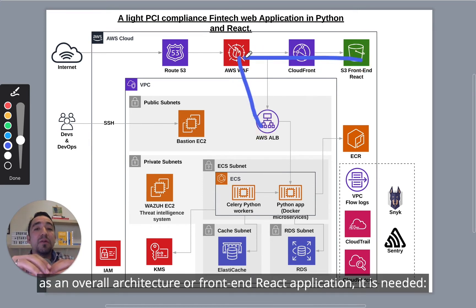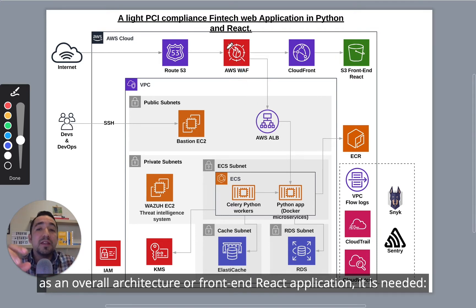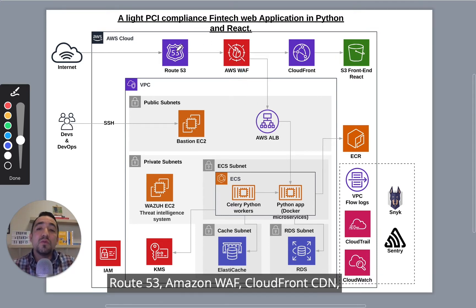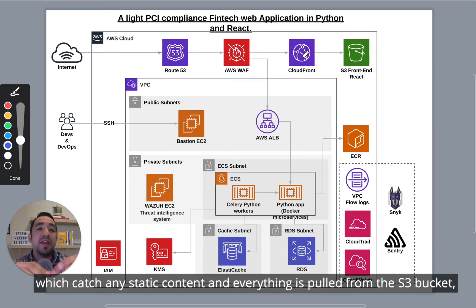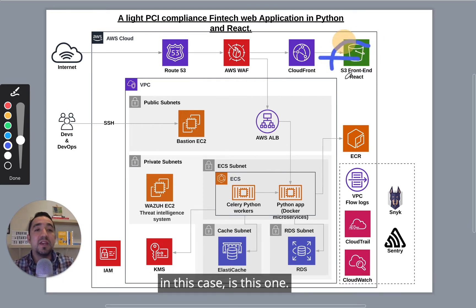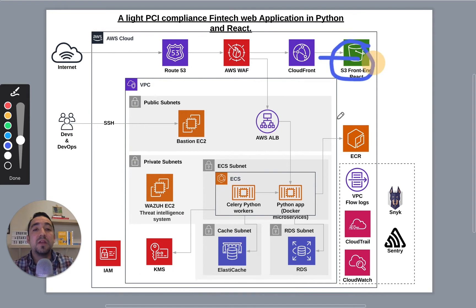As an overall architecture for a frontend React application, it requires Route 53, Amazon WAF, CloudFront CDN — which caches any static content — and everything is pulled from the S3 bucket.